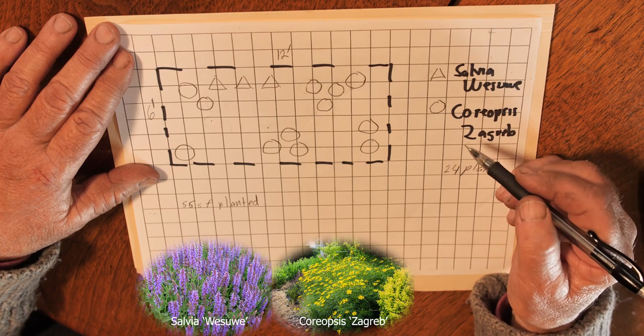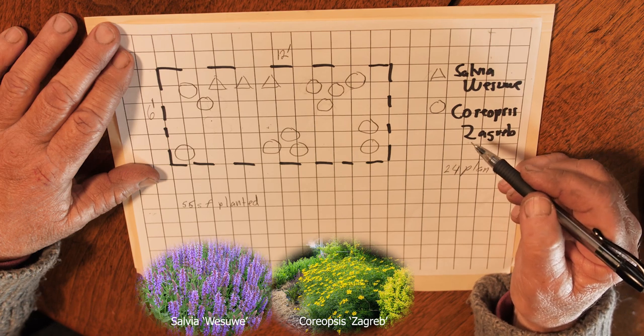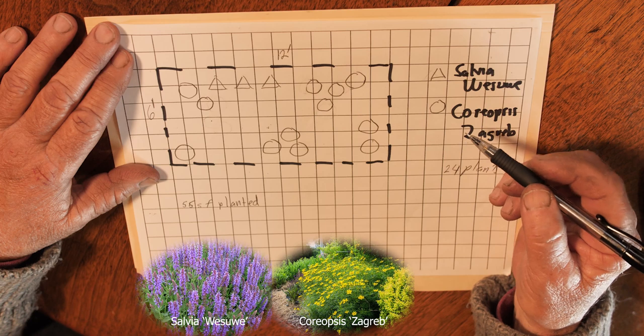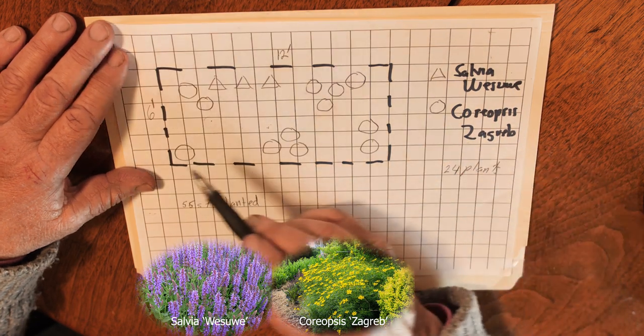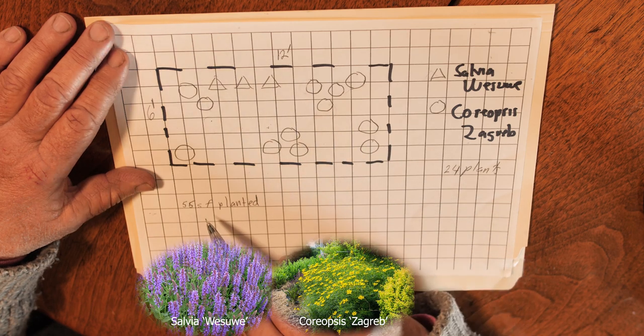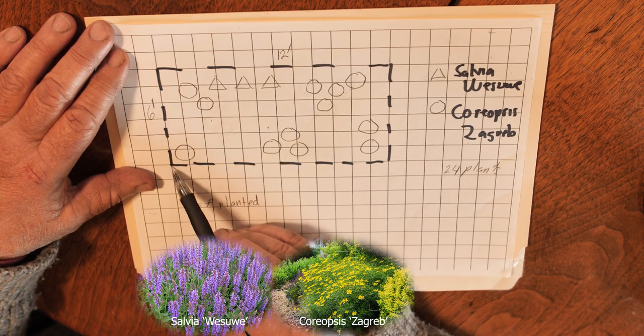Because this growth rate is a little bit slower for the Coreopsis, I'm going to use a few more out of the total square footage. My total square footage is 6 by 12, 72 square feet, but I'm actually planting 55 square feet because I'm not planting the edges.